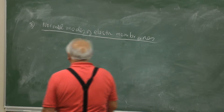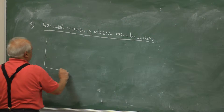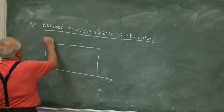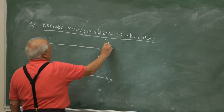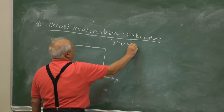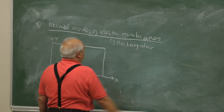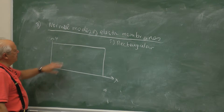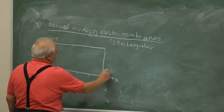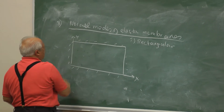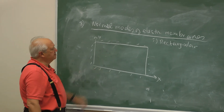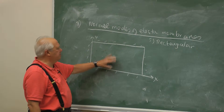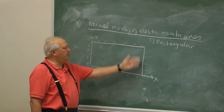I start with a rectangular membrane. This is X, this is Y. We consider this rectangular membrane which is fixed on all sides, free to vibrate. The easiest way to think of it is a two-dimensional string — it has an X string and a Y string.